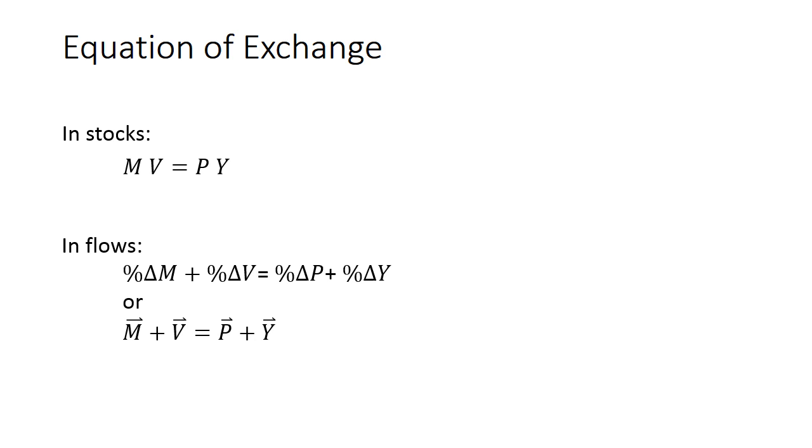Cowan and Tabarrok use little arrows over the letters to represent rates of change. It's common in other books to use the percent change symbols, but let's stick with Cowan and Tabarrok's notation.